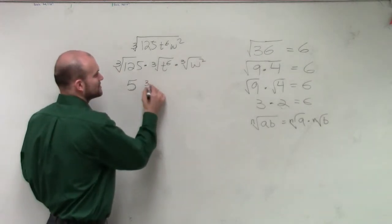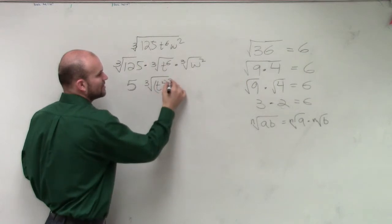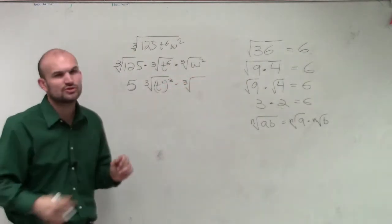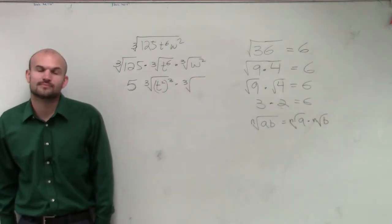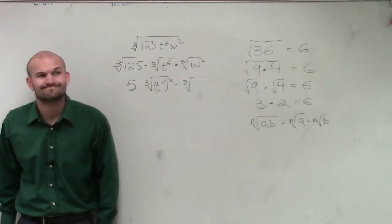t squared raised to the third power. So I can write this as the cube root of t squared raised to the third power times the cube root. Can I write w squared without using a fraction? Can I write w squared raised to the third power without using any fractions? No.